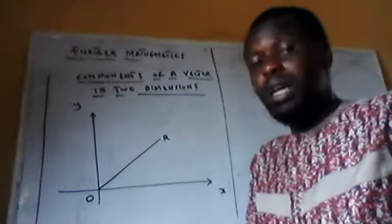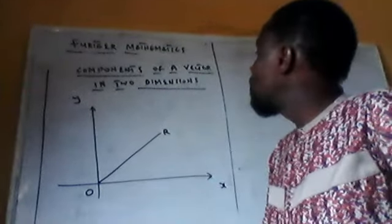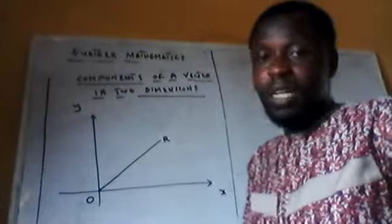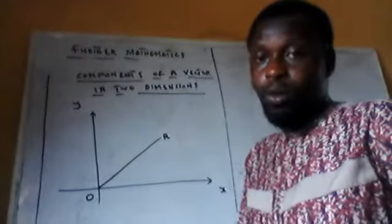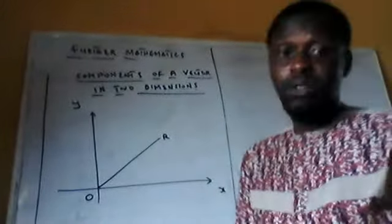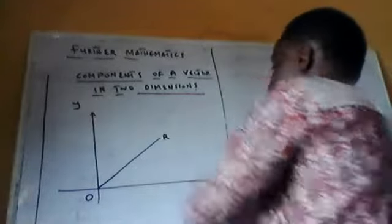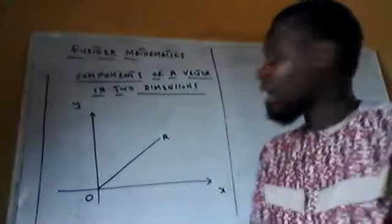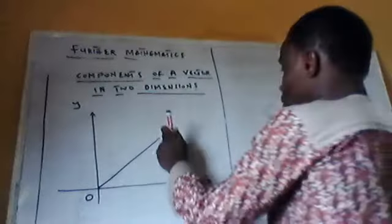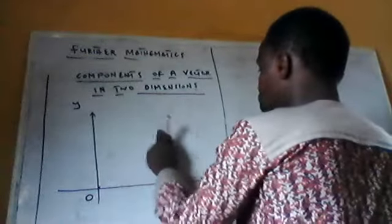Let's continue from where we stopped. Now let's look at the component of a vector in two dimensions. Let's assume we are having a coordinate plane with a Y axis and X axis, and we have a point on the Y axis. Let's say we are having point R.